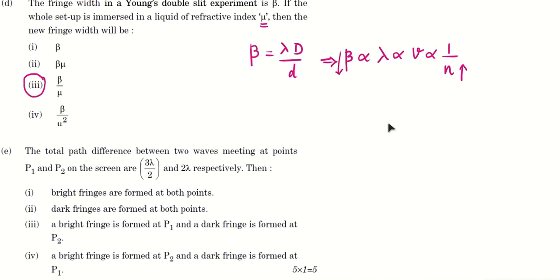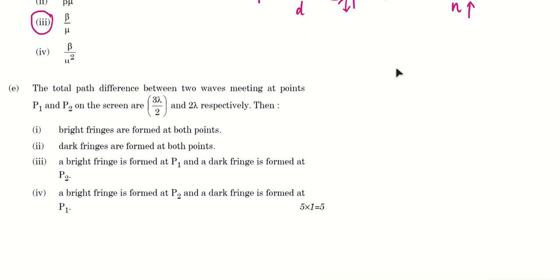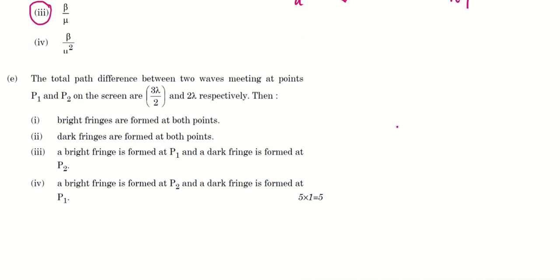Next. The total path length difference between two waves meeting at points P1 and P2 on the screen are 3 lambda by 2 and 2 lambda respectively. Then we have to say about whether they are bright fringe or dark fringe.